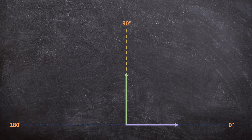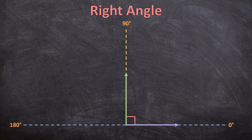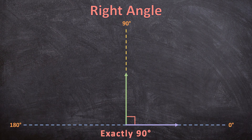Now this angle is not between zero and 90 degrees — it is exactly 90 degrees, and this is a right angle. A right angle is exactly 90 degrees, and we always indicate it with a square between the two lines. This is a right angle: exactly 90 degrees.